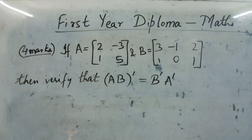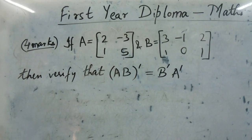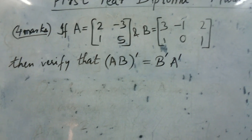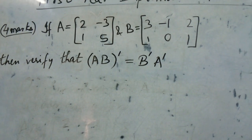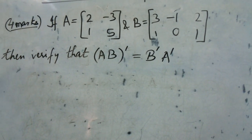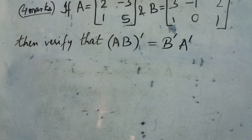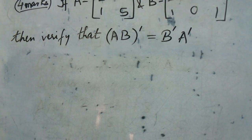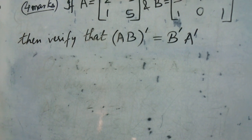The next topic is a numerical problem for the chapter on matrices. Matrix A is given with elements 2, -3, 1, and 5, and matrix B is 3, -1, 2, 1, 0, 1. It has been given that AB transpose is equal to B transpose into A transpose, and we need to verify this.